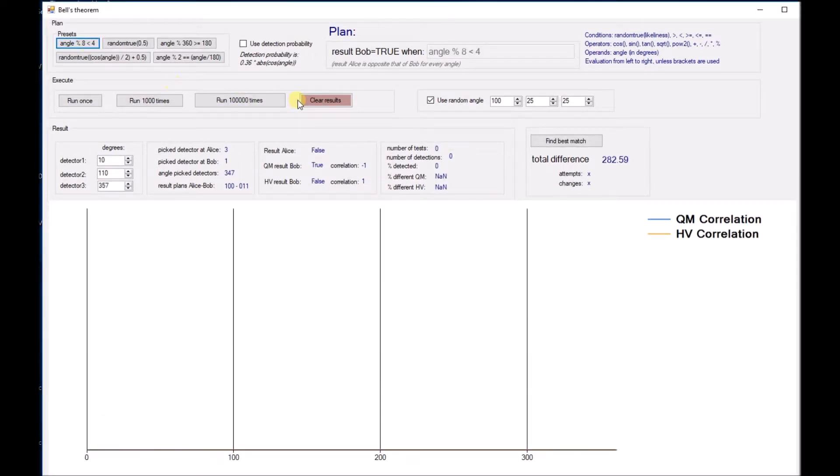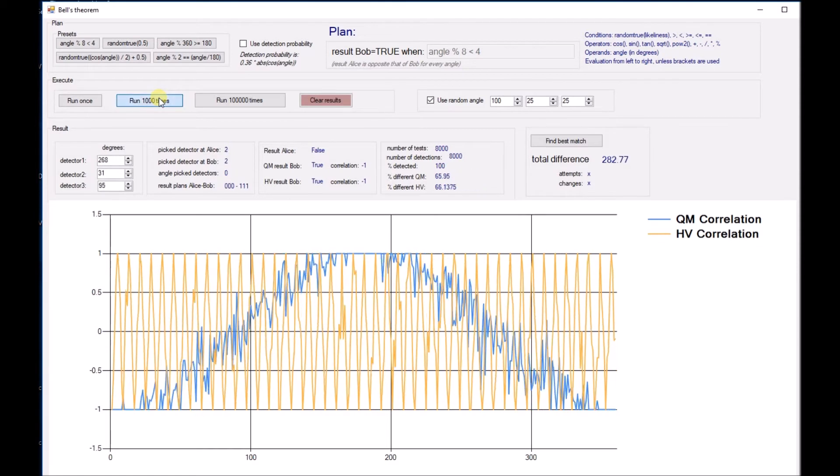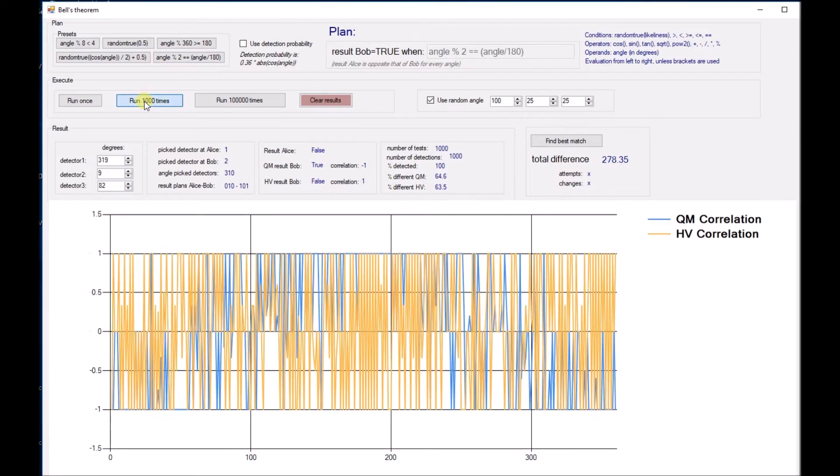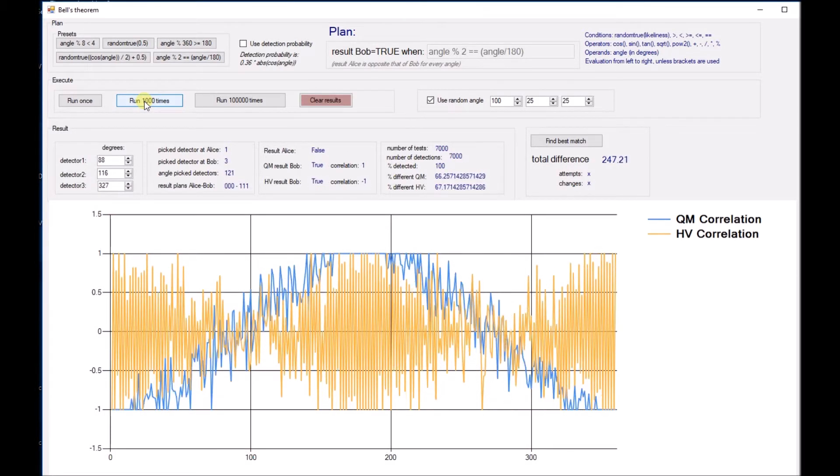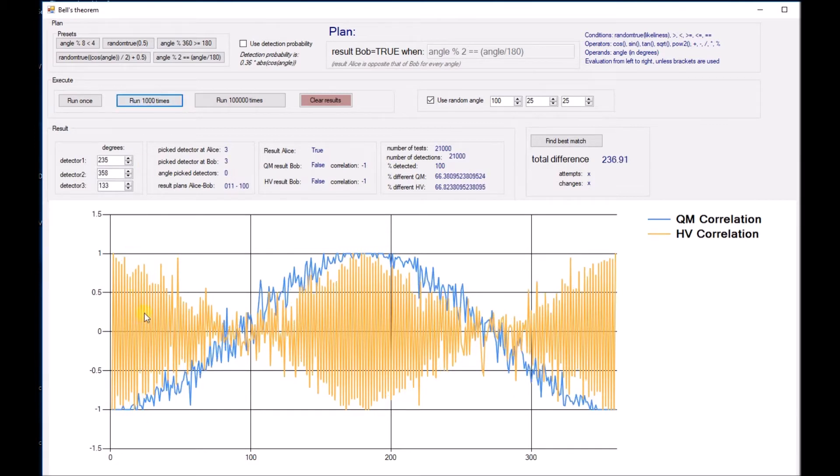We can use a modulo operator to create spikes at certain angles. We can even create funny patterns like this one. However, we can never achieve the result that the quantum mechanics experiment yields.